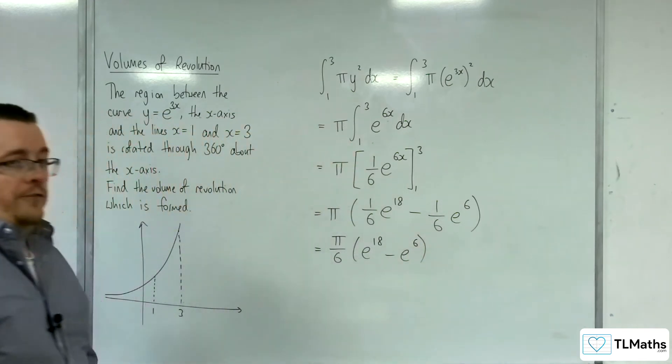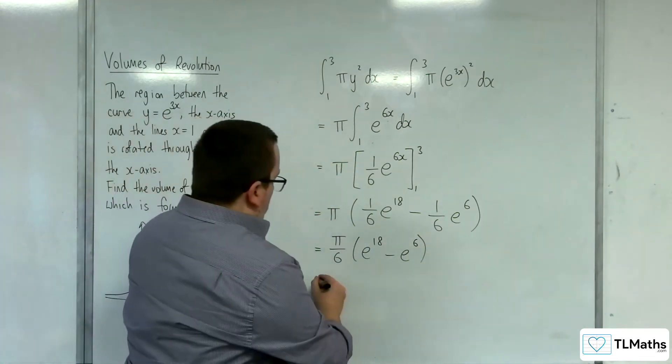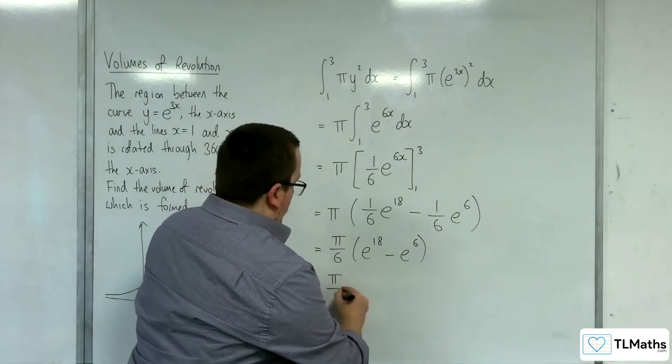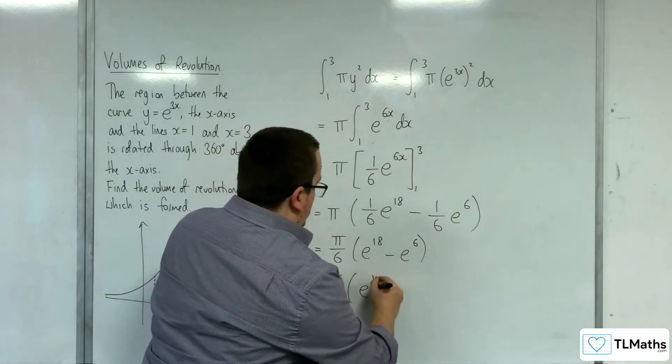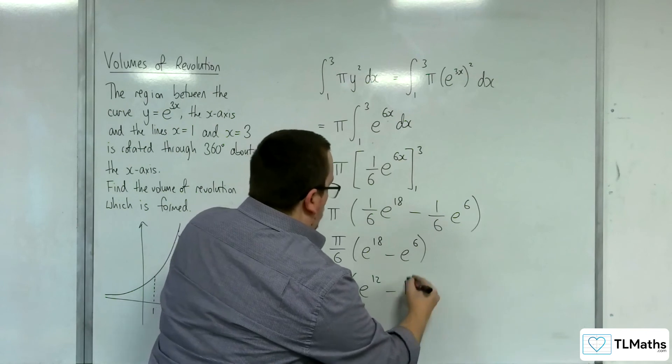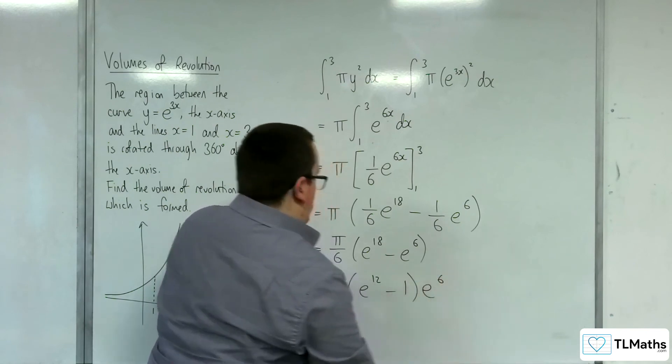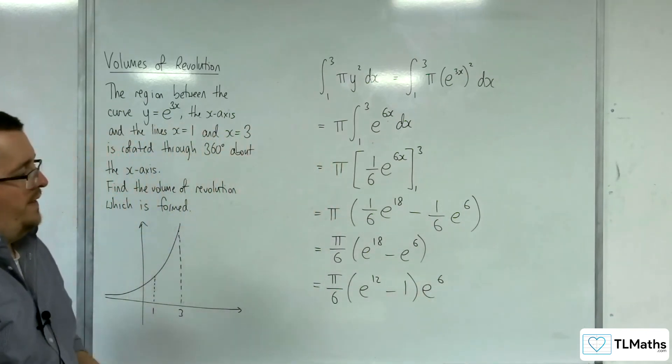You could also factor e to the 6 out as well. So pi over 6 times e to the 12 take away 1, times e to the 6. You could write it like that as well.